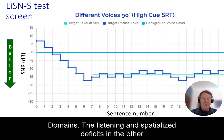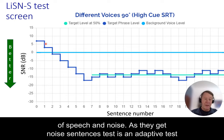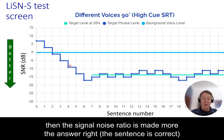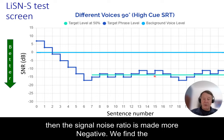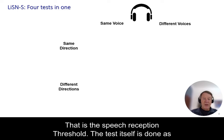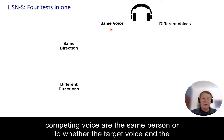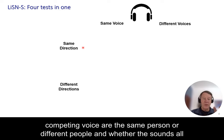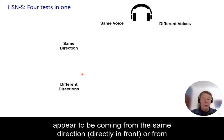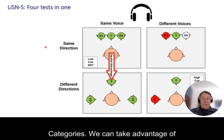The Listening in Spatialized Noise Sentences test is an adaptive test of speech in noise. As they get the answer right, if the sentence is correct, then the signal-to-noise ratio is made more negative, and we find the level at which people can just report back 50% of the words in the sentence — that is the speech reception threshold. The test is done under four different subtests presented through headphones, differing according to whether the target voice and the competing voice are the same person or different people, and whether the sounds appear to be coming from all the same direction or from different directions.